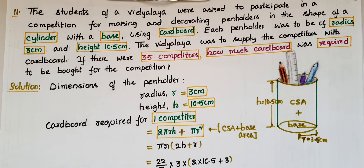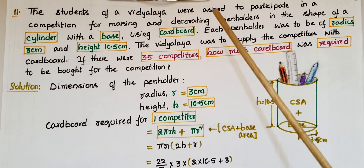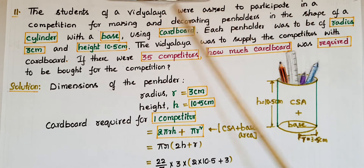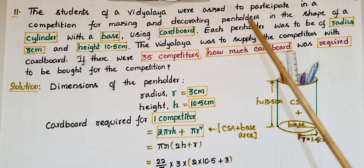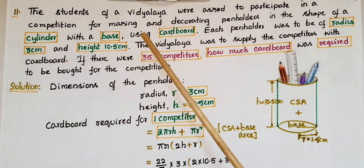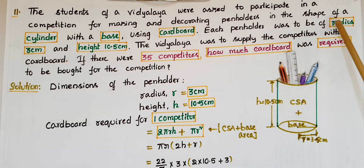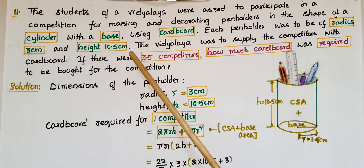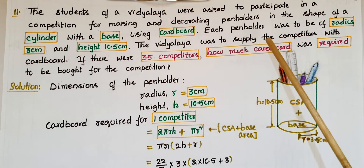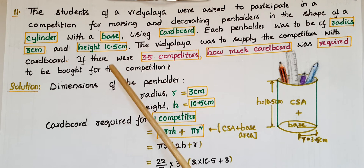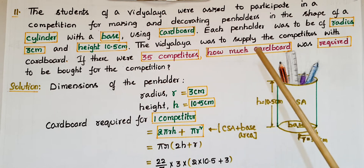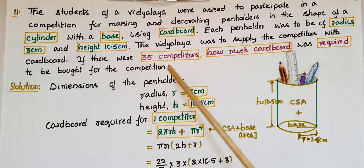Hello everyone, today I am going to tell the solution of the 11th problem from Exercise 13.2 from Surface Areas and Volumes from NCERT Class 9. The students of a Vidyalaya were asked to participate in a competition for making and decorating pen holders in the shape of a cylinder with a base using cardboard. Each pen holder was to be of radius 3 centimeters and height 10.5 centimeters. If there were 35 competitors, how much cardboard was required to be bought for the competition?